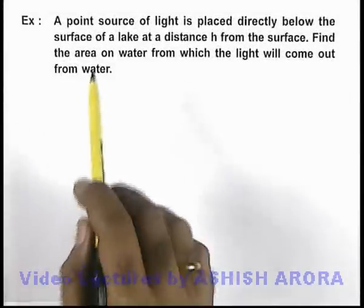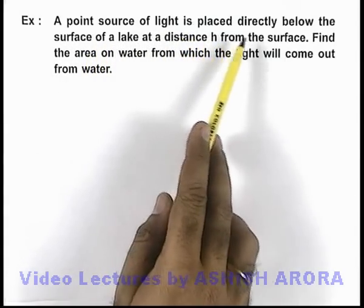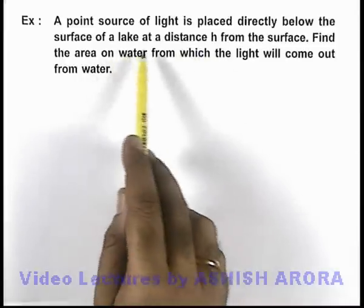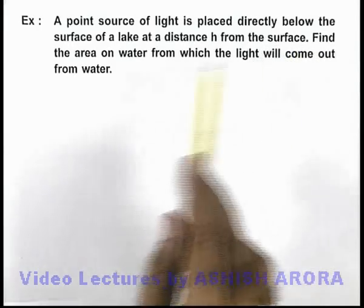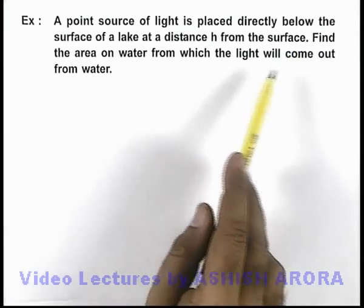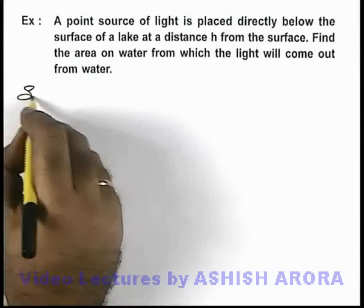In this example we are given that a point source of light is placed directly below the surface of a lake at a distance h from the surface. We are required to find the area on water from which the light will come out from water in this situation.